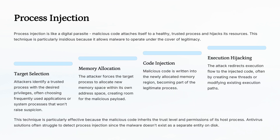Process injection is like a digital parasite. Malware can inject its code into a legitimate process, hiding behind its good reputation. That's why defenders look for suspicious behavior inside trusted processes, because the process might not be as innocent as it seems.